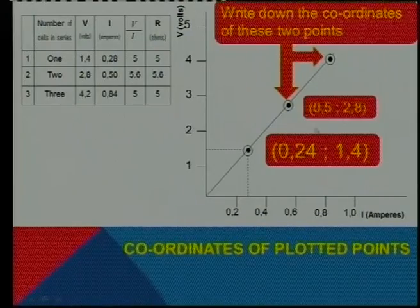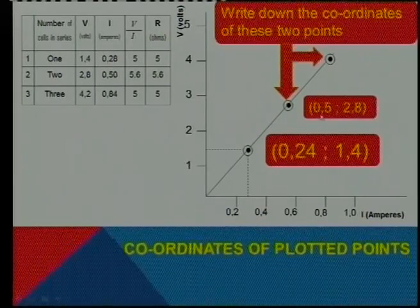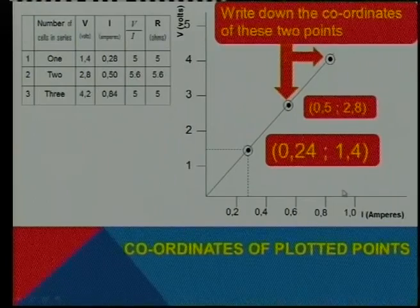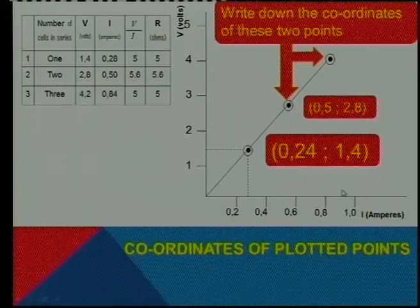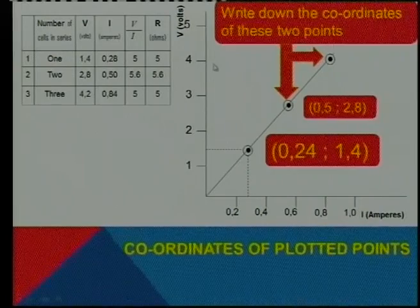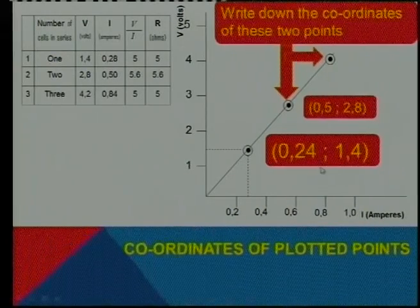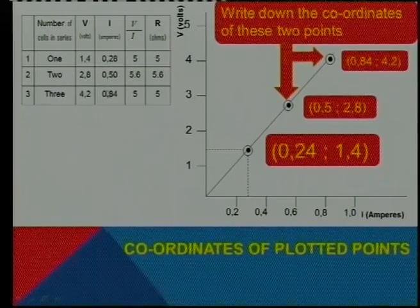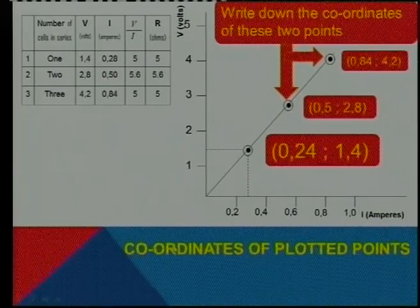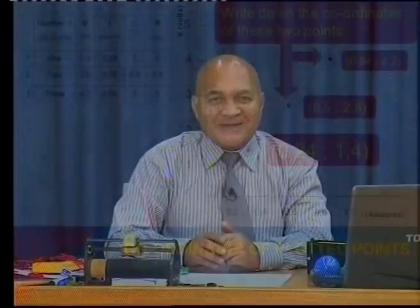And that point there, something above 8. That's right. And that point across that way, something roughly just over 4. That's correct. There I read it 0.84 and 4.2. Now, let us ensure that you can write coordinates. Once the examiner does it once, they will keep on asking such questions. So ensure that you bring your mathematics into the science room that they exactly know how to do that.